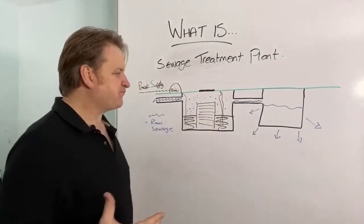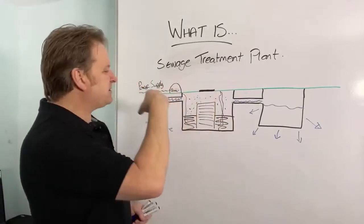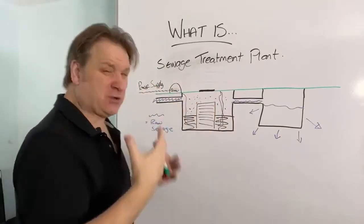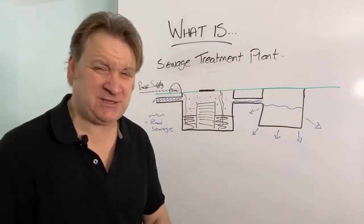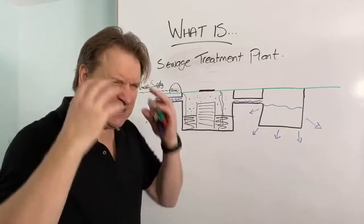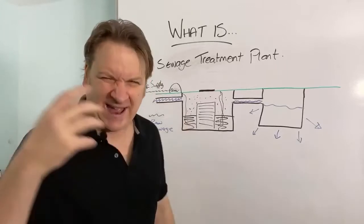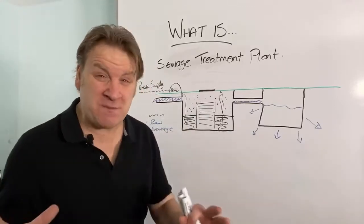So that's the difference between a sewage treatment plant and a septic tank. Now, as you can see, there's a lot more moving parts here. You've got compressors, you've got motors, you've got cogs, you've got bearings, you've got pulleys, you've got shafts, you've got loads and loads of things to go wrong. And what's nuts about this, what I find is nuts about this, is the fact that electric and water just don't mix.